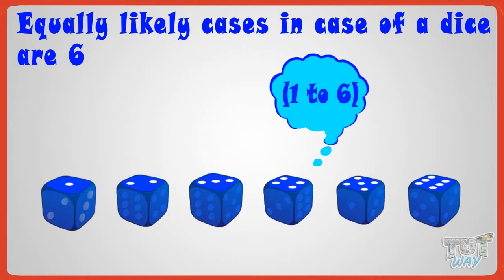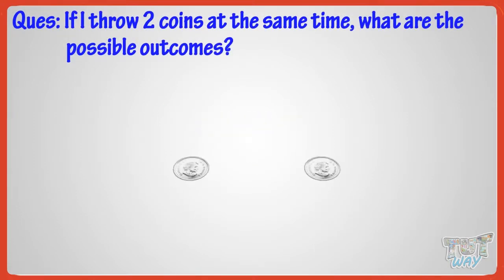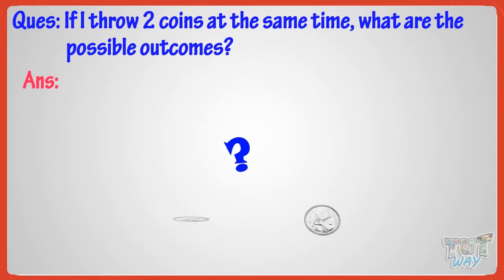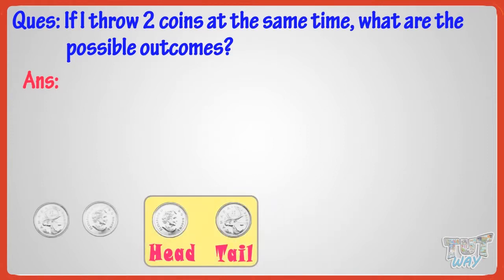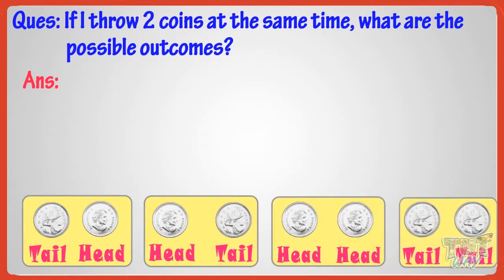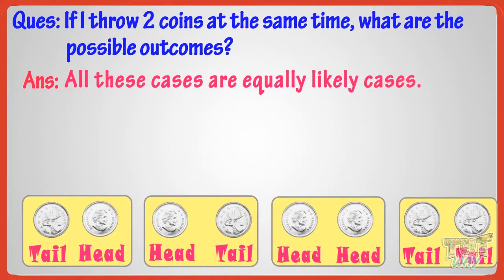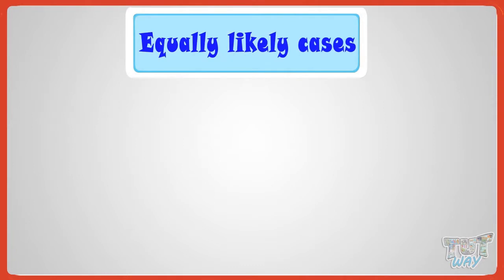Now let's take another example. If I throw two coins at the same time, what are the possible outcomes or cases? It is: either one head and one tail, or one head and one tail from the other arrangement, or either both heads or both tails. And all these cases are equally likely — all these cases are equally probable to occur. So how many equally likely cases are there? Four equally likely cases are there if you flip two coins. So kids, now you know what are equally likely cases.